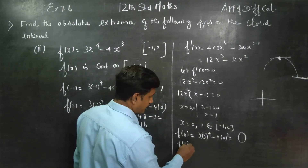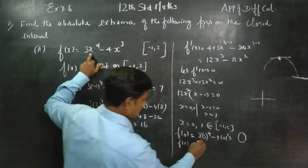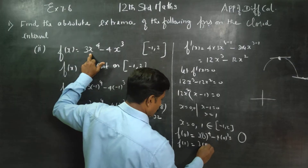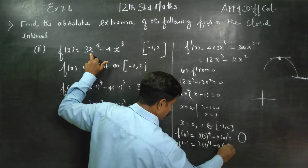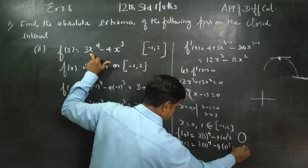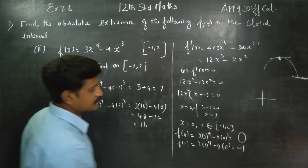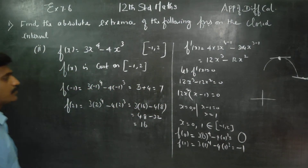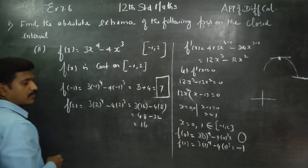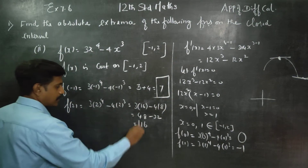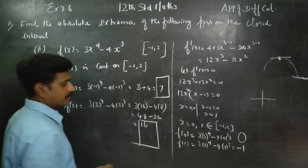Now we find f(1). Substituting: 3 times 1⁴ minus 4 times 1³ equals 3 minus 4 equals minus 1. So the four values are: f(a) equals 7, f(b) equals 16, f(c) equals 0, f(d) equals minus 1.